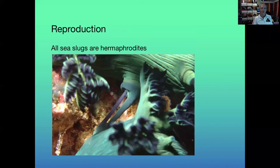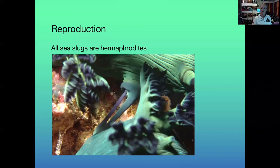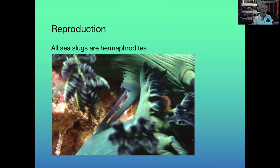All sea slugs are hermaphrodites — they have both male and female reproductive organs. They generally mate right sides together, which means both individuals get fertilized at the same time and both are capable of laying egg masses. When you think about it, that's probably a good thing when you move slowly and can't see well — when you get the chance, make it count.